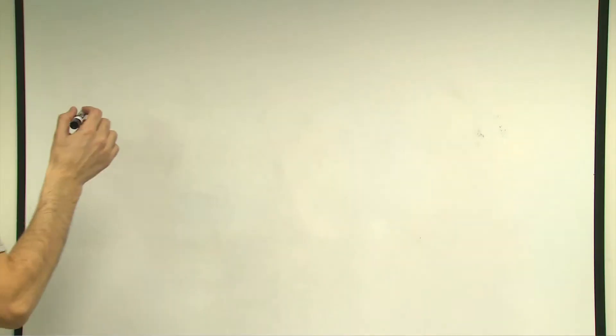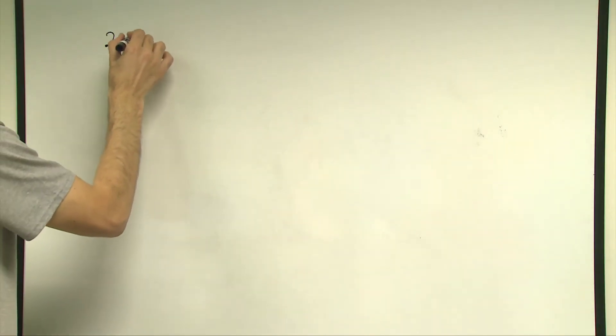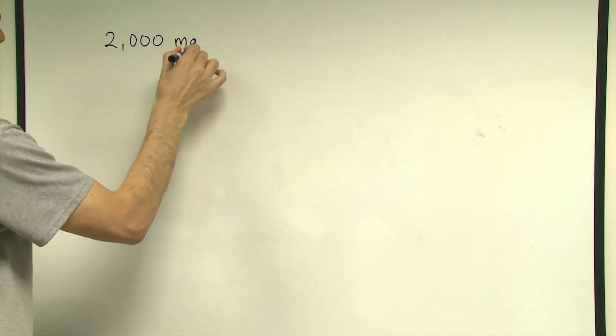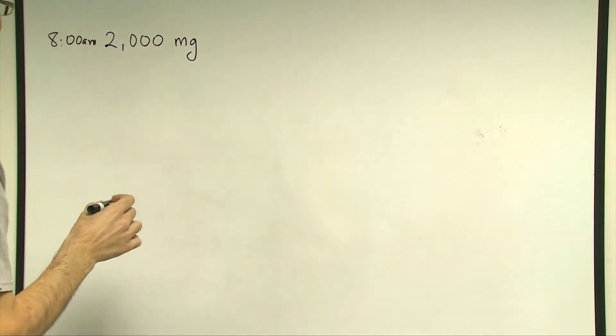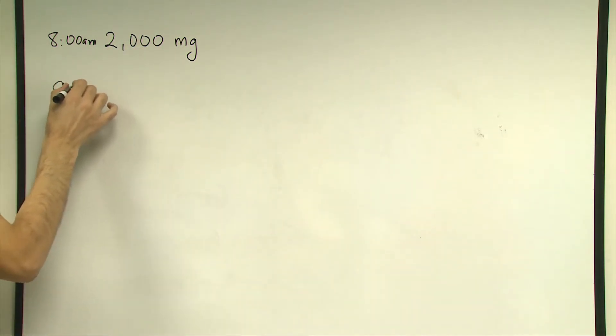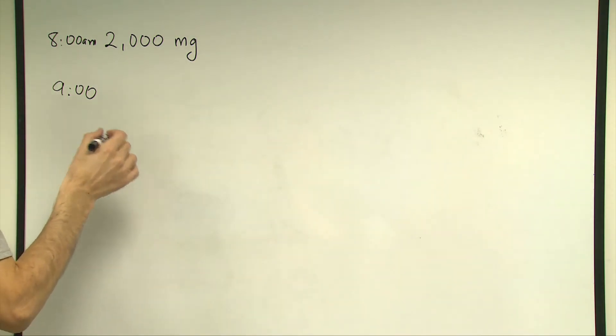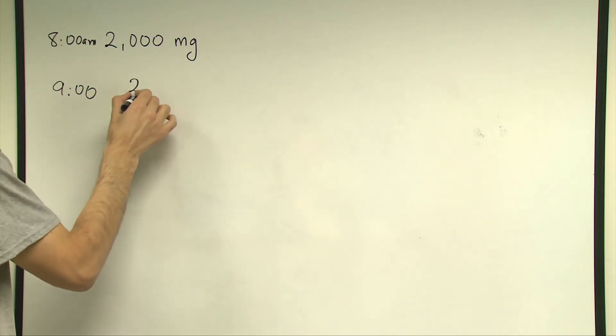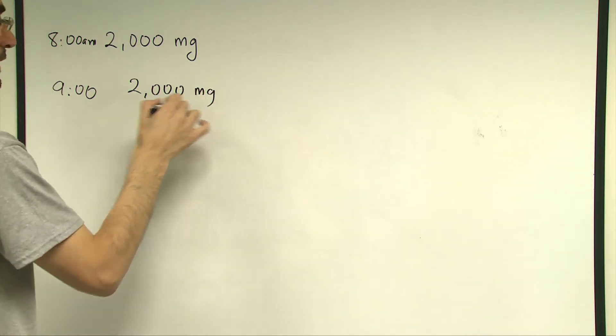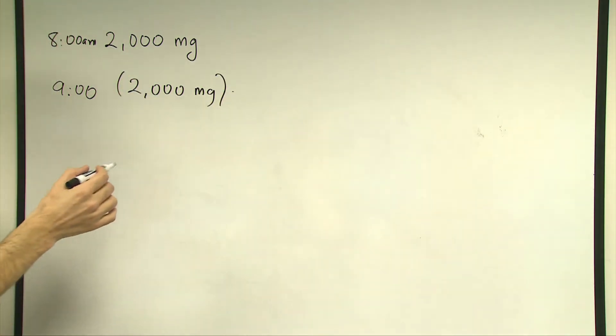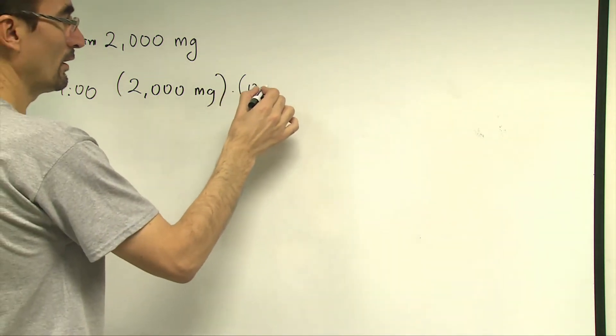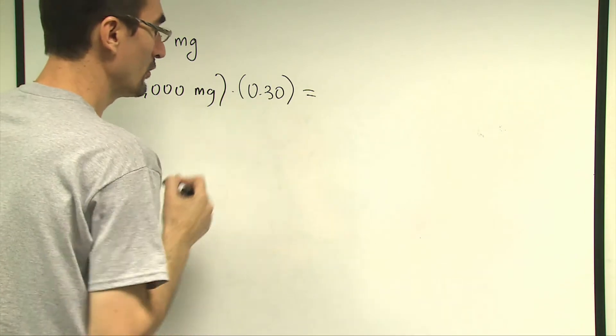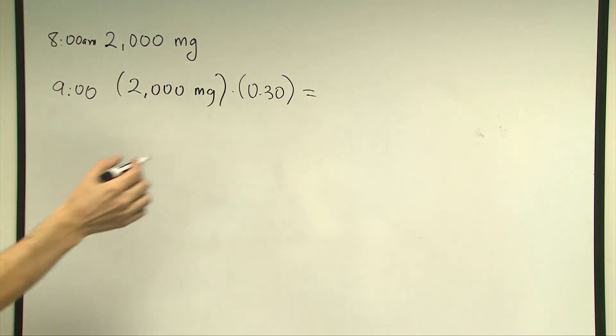Here is the answer to the question. At 8 a.m., this patient is administered 2,000 mg of medicine. So, this is the original amount. What's going to happen in one hour is that 30% of this concentration is going to be present at the patient's body. How can I calculate this? I need to multiply this 2,000 mg by 30%. In order to do that, conversion would be needed from percentage to decimal number, where 0.30 is the equivalent value to 30%. So, this is going to give me 600 mg.